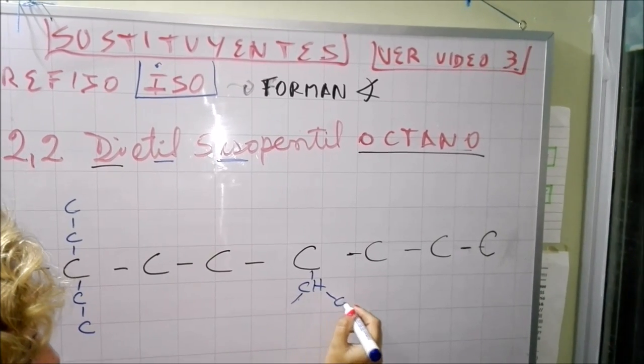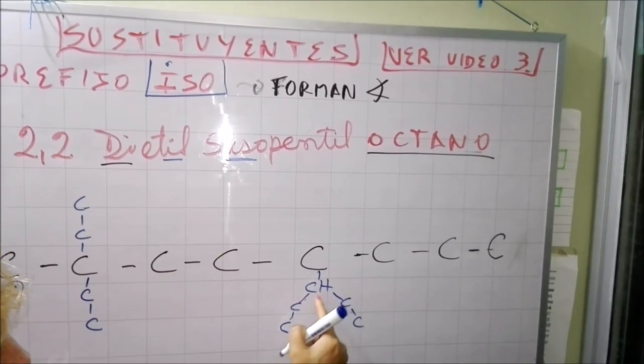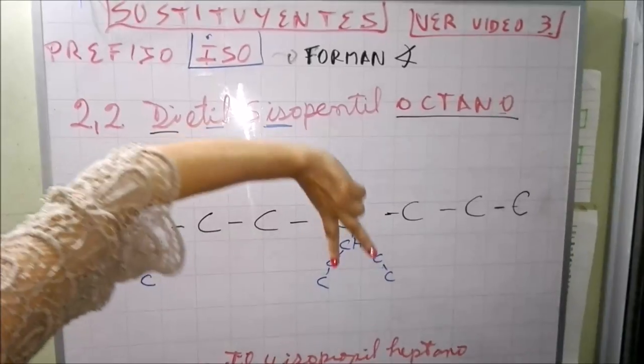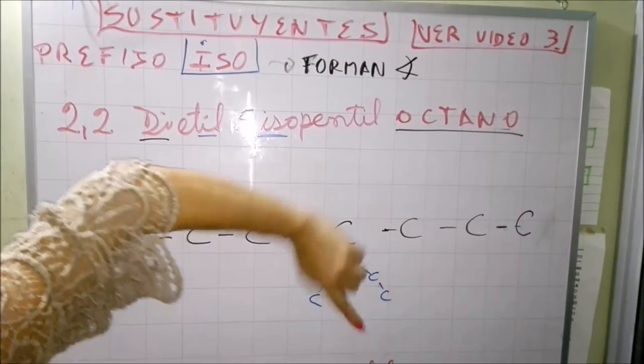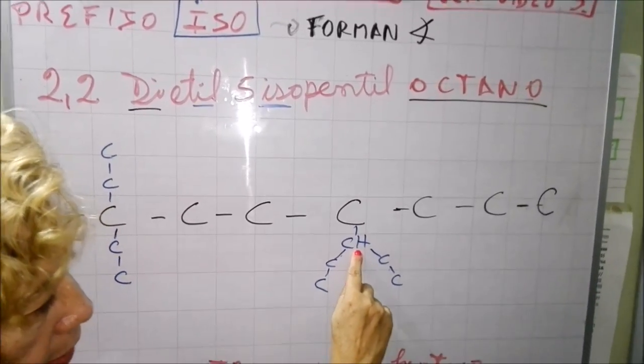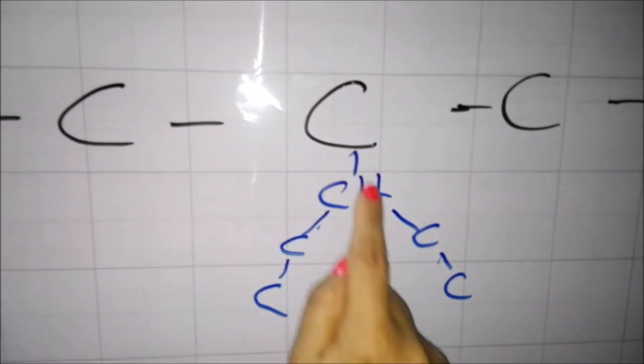Entonces cuento 1, 2, 3 y aquí 2 más. Entonces 1, 2, 3, 4, 5. Y te acuerdas que yo cuando te indiqué lo que son sustituyentes iso, que abres como un compás. Mira, en el centro vas a tener siempre el CH y el CH está agarrado a cadena principal, agarrado a cadena principal con el CH.